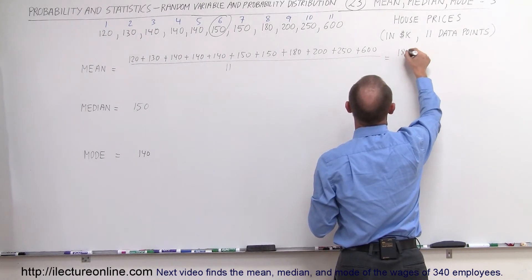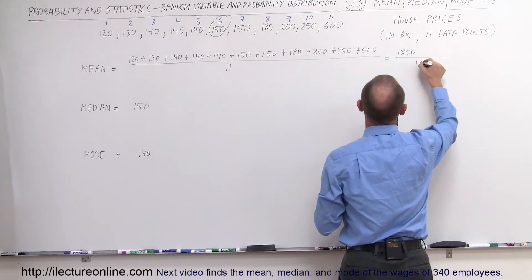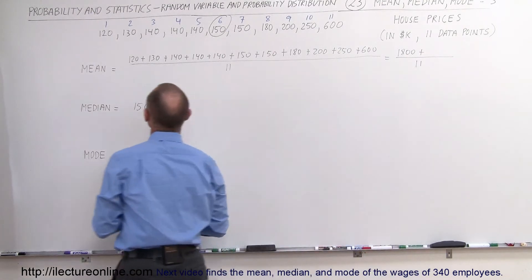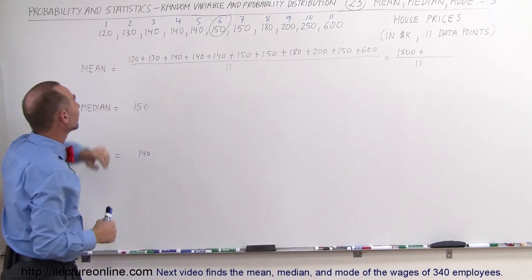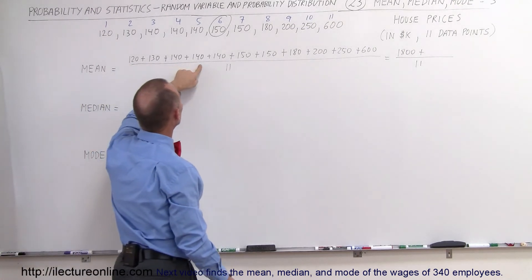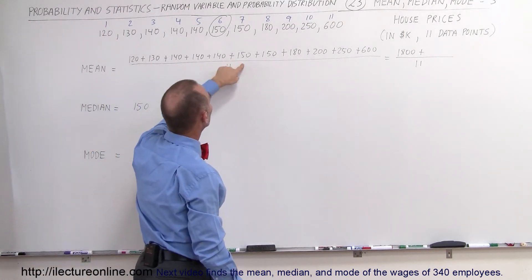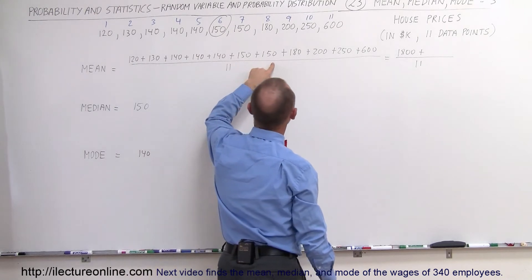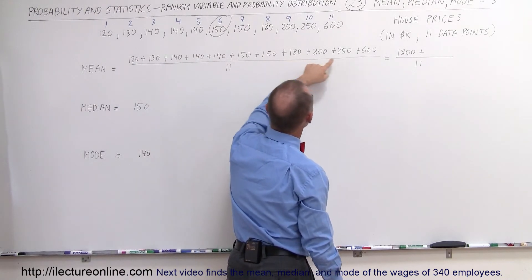So that's 1,800 divided by 11 plus... Now we add all the tens, so to speak. So 20 plus 30 is 50, 90, 130, 170, 220, 270, that would be 350, 400.